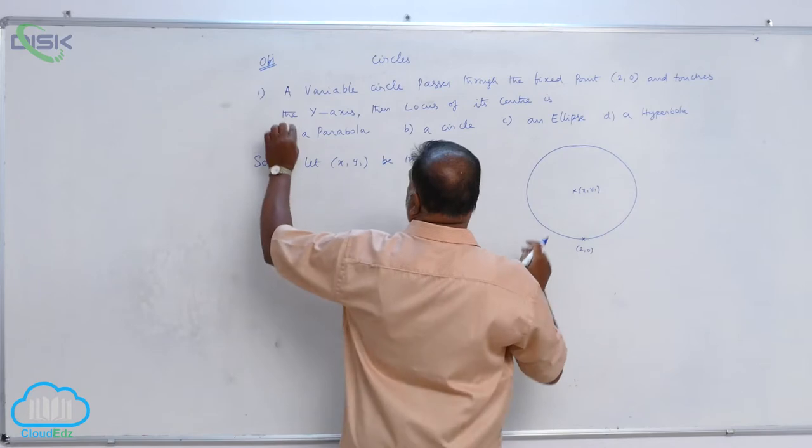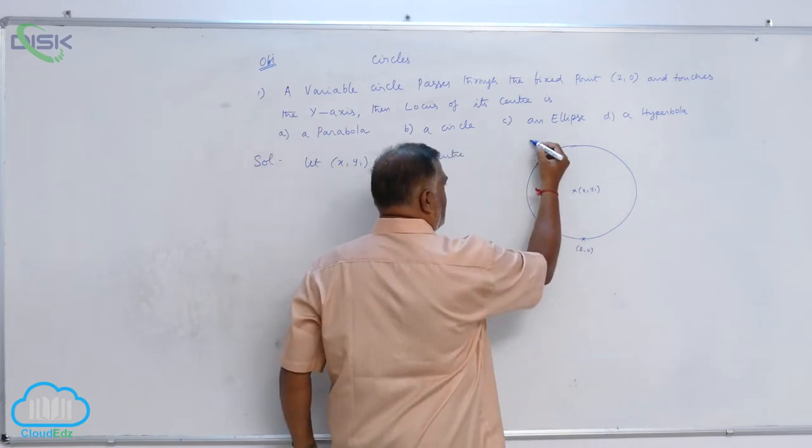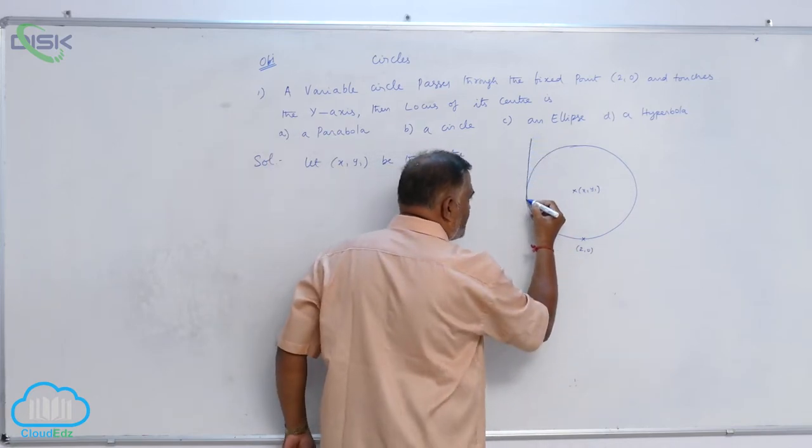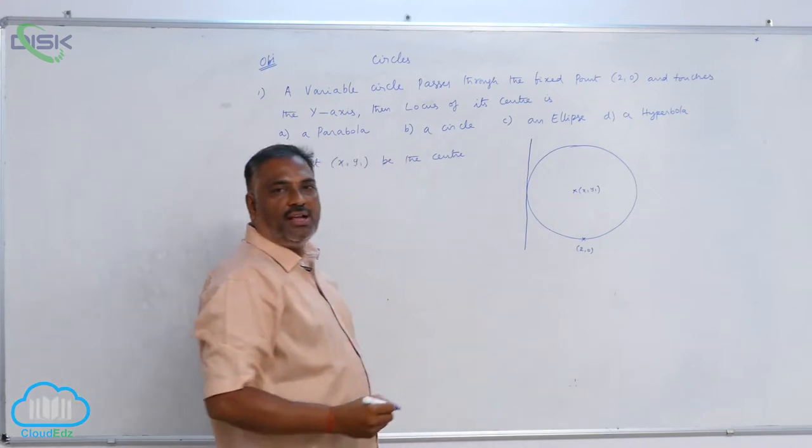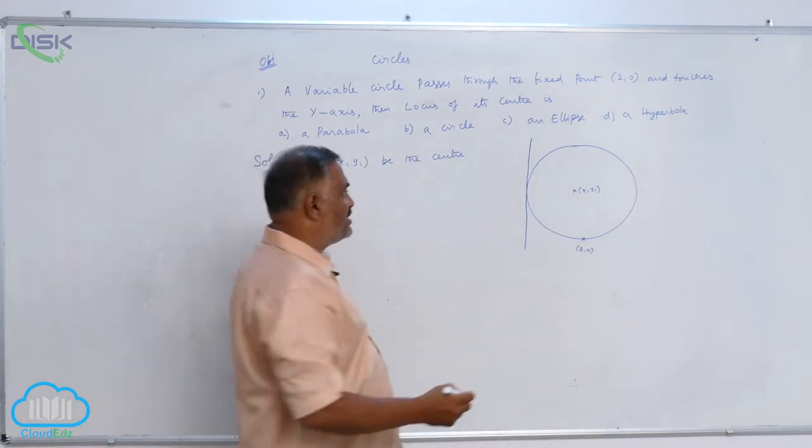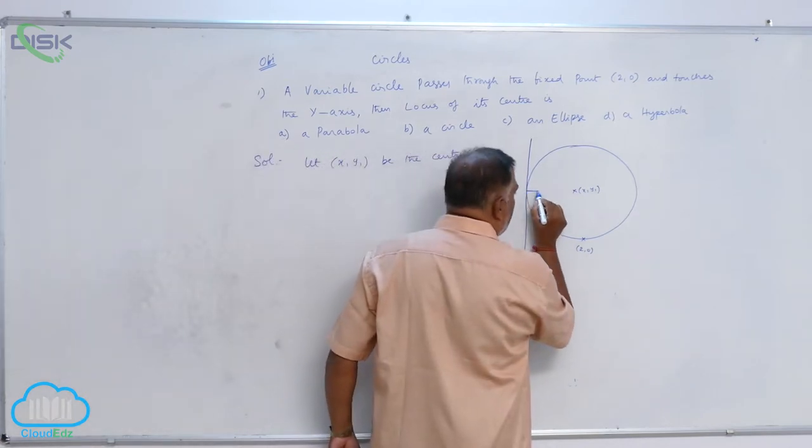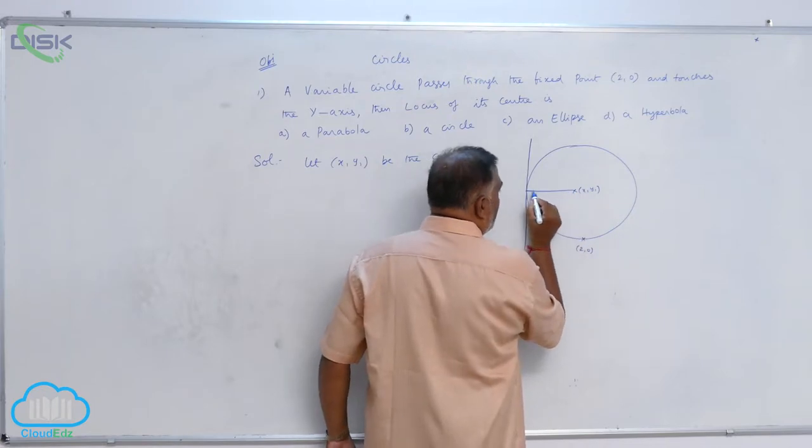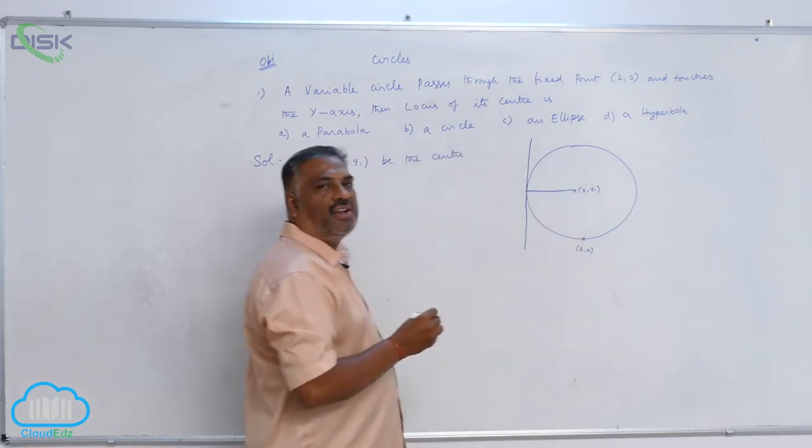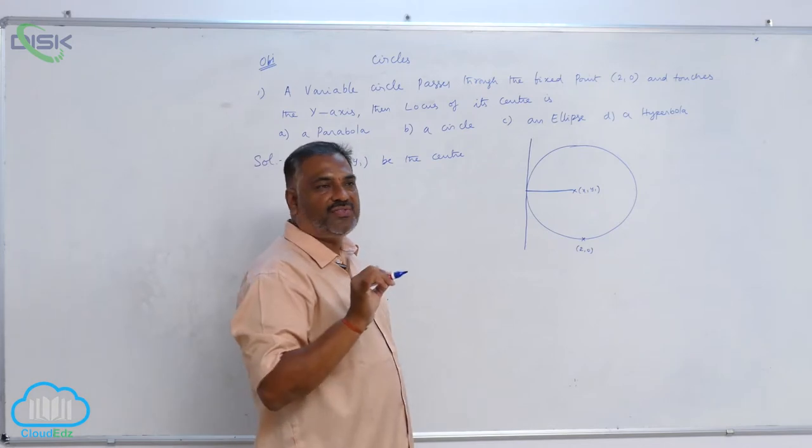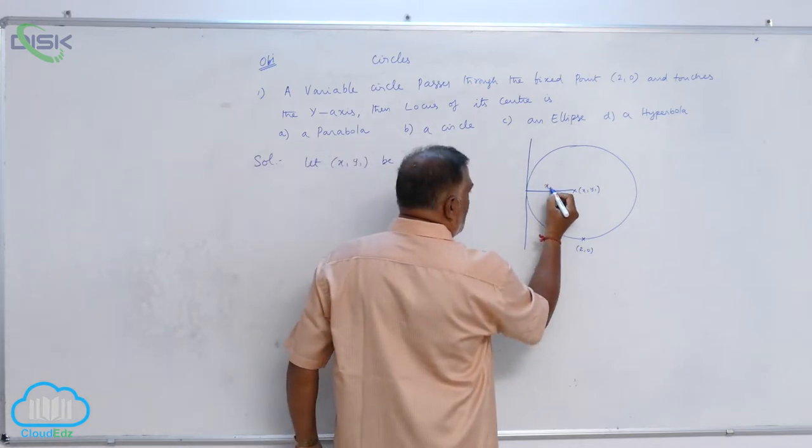Also it is given that circle touches the y-axis. So y-axis is touching. We know that whenever circle touches the y-axis, this is going to be the radius. Of course this is nothing but horizontal distance, x-coordinate of the center. That is mod x1.